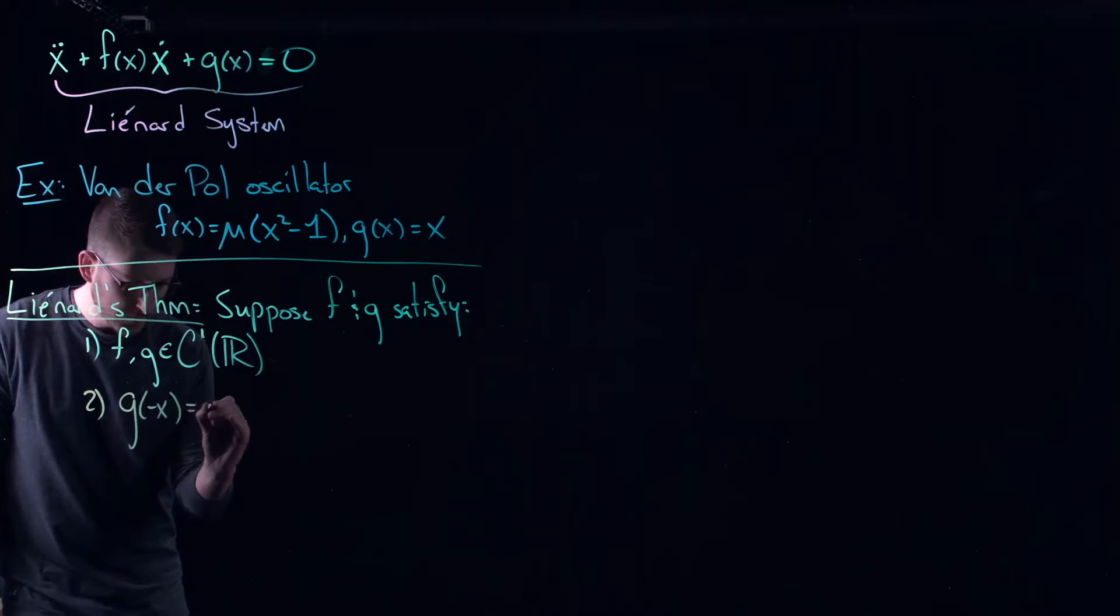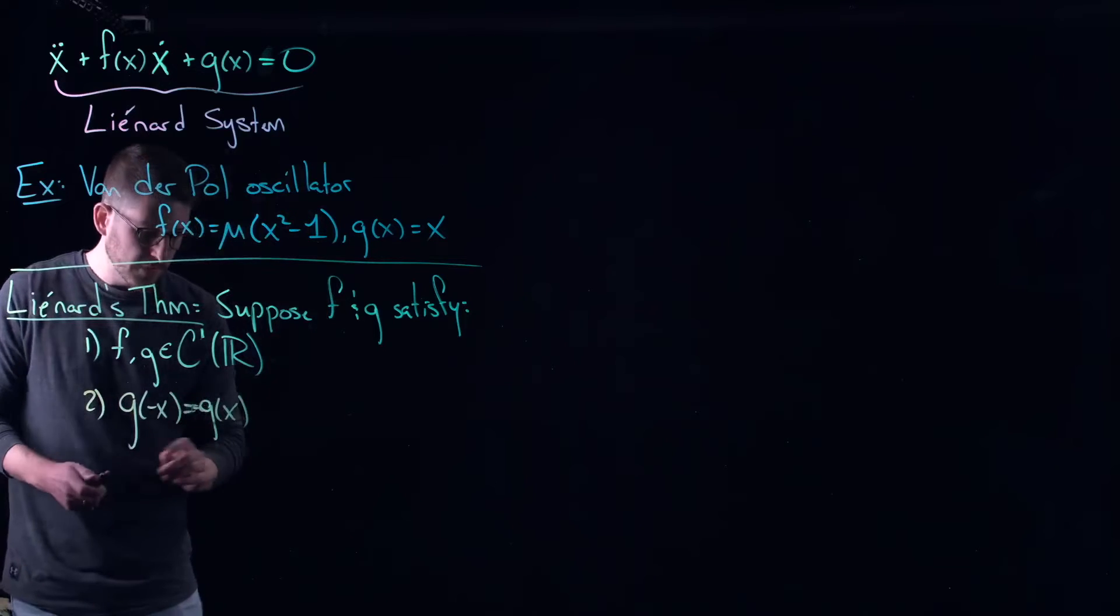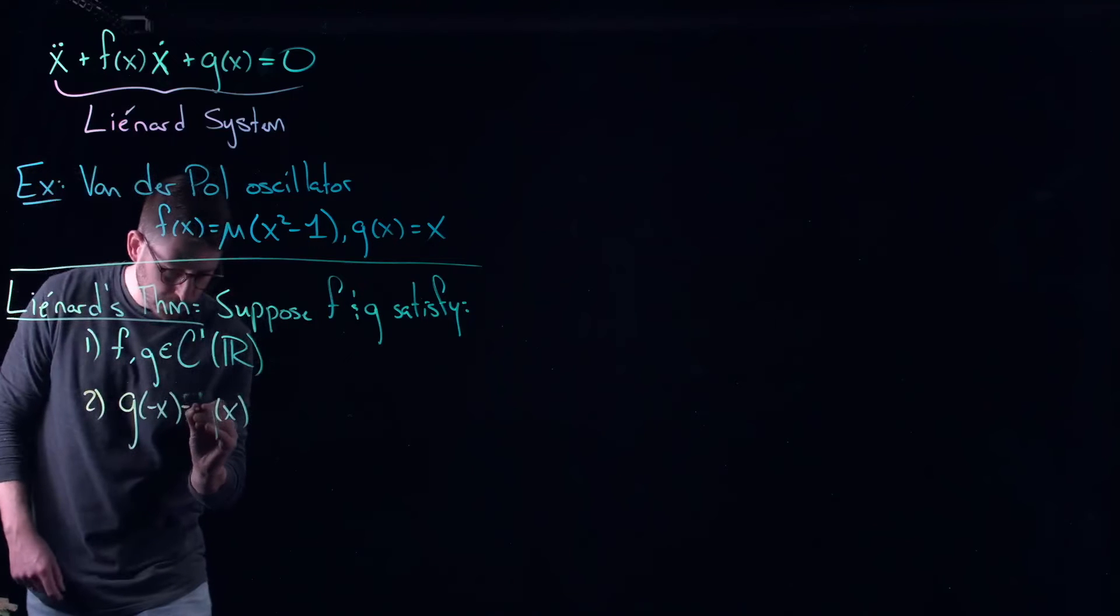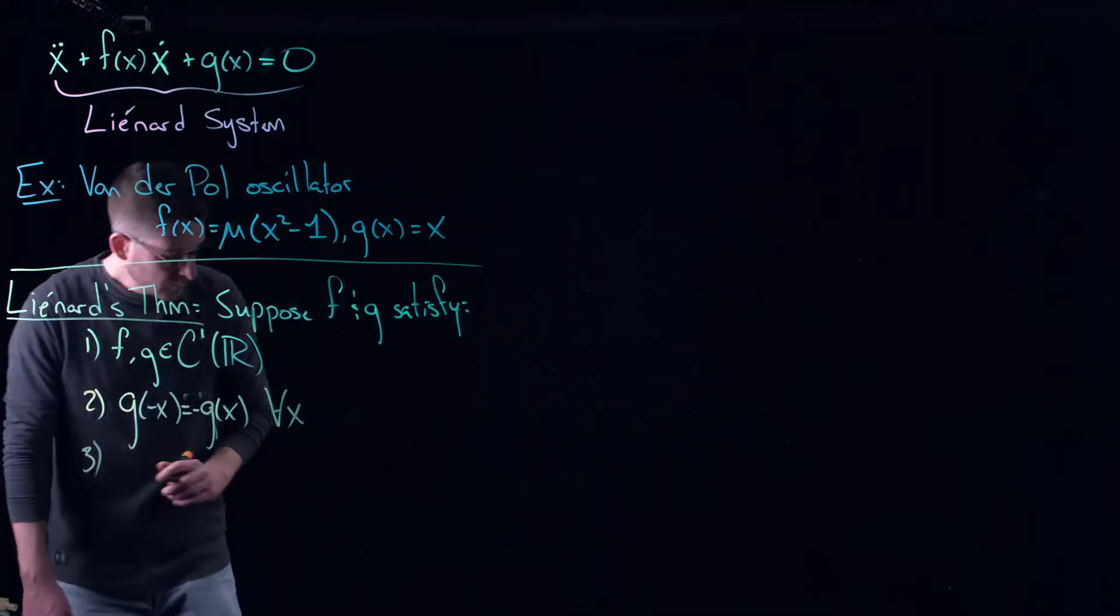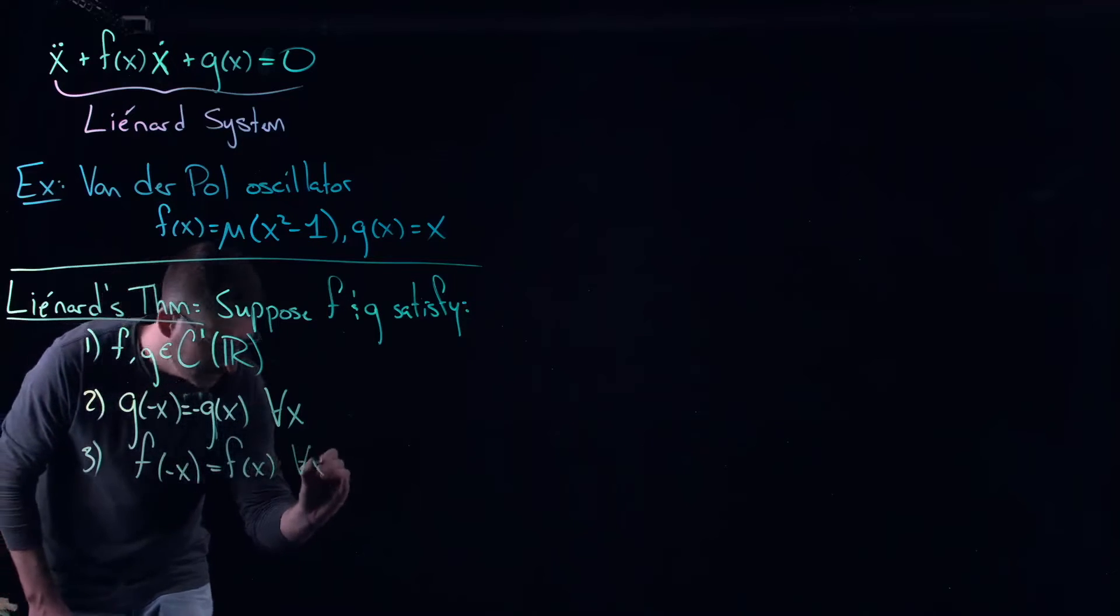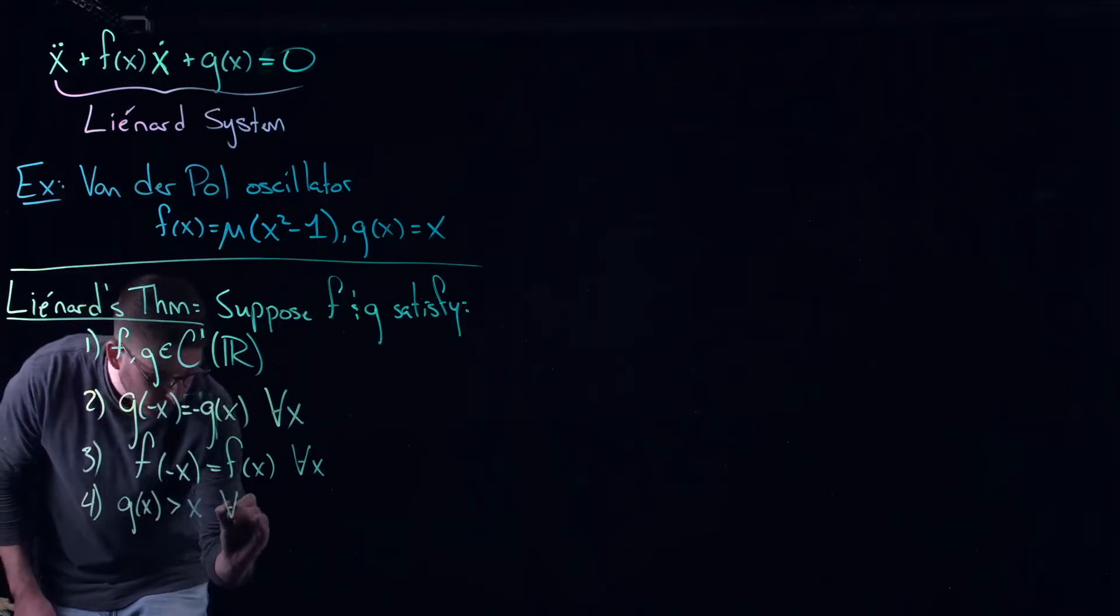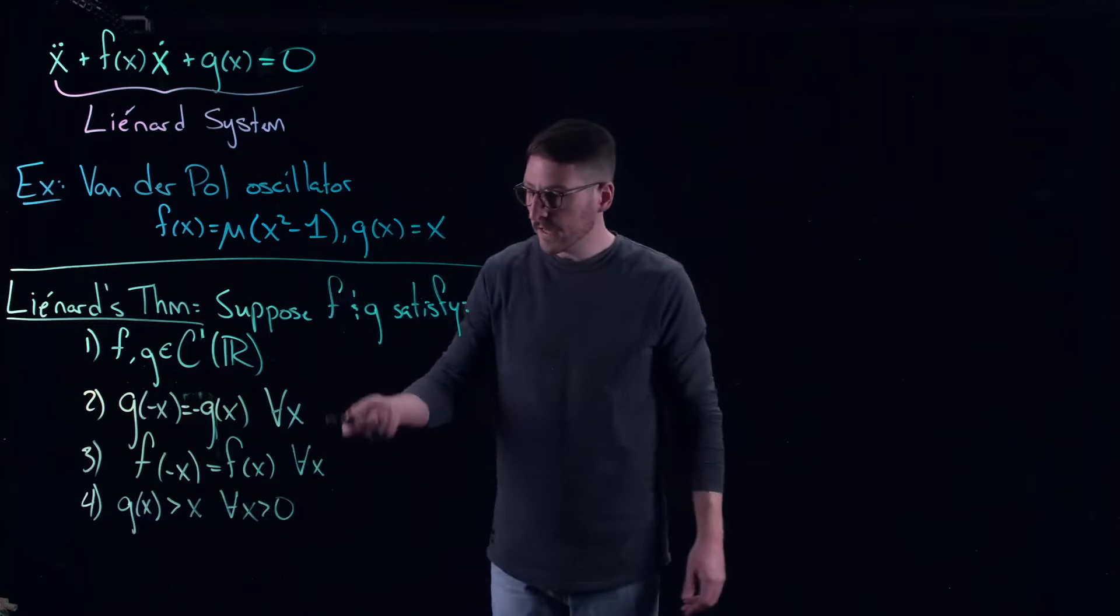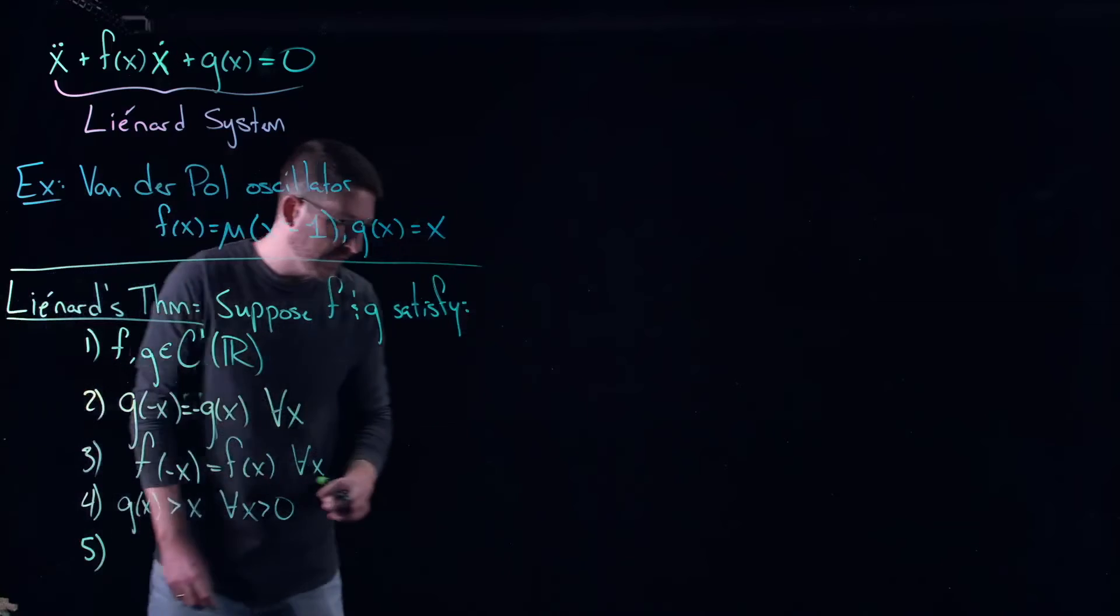Okay what's the next one? Function g of minus x is equal to minus g of x. You can again use the Van der Pol oscillator as the guiding principle here. Everything should adhere to basically the functions that you're seeing with the Van der Pol oscillator. So that means that g has to be an odd function, f has to be an even function, and g of x has to be positive for all x positive.